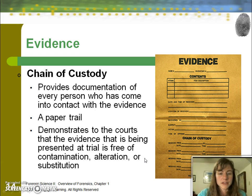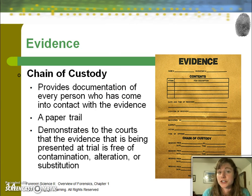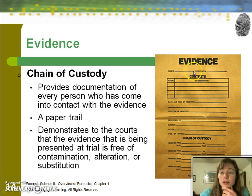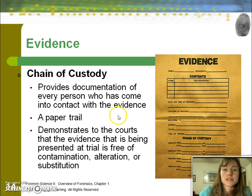Speaking of evidence, one of the most important things an investigator will do is track the custody — who held onto that evidence and who was responsible for it from the time of collection through when it was processed. This documentation is the chain of custody. It provides a paper trail, and without it, your evidence, no matter how good, is inadmissible in court.